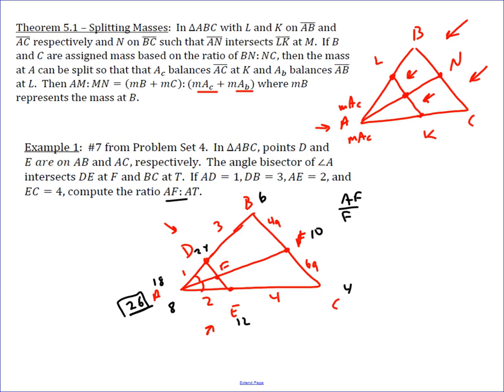that means AF to FT is going to equal 10 over 26. Remember, you do the opposite of the masses so you can balance it out. So 10 over 26 simplifies to 5 over 13. And if that's 5 over 13,